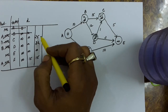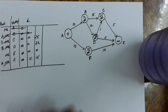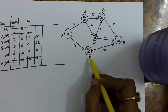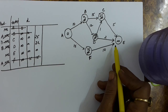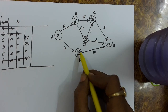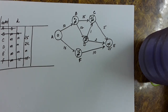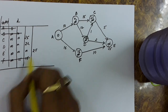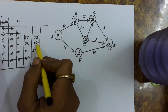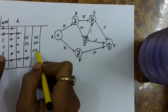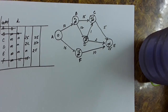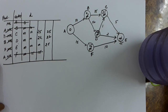Now the remaining vertices have distances 25, 22, infinite, and 15. Out of these, 15 is the smallest, so we delete F. The connection from F is F to E with distance 10. So 15 plus 10 = 25, and we set the distance of E as 25. E has been explored from F, so the predecessor of E will be set as F.